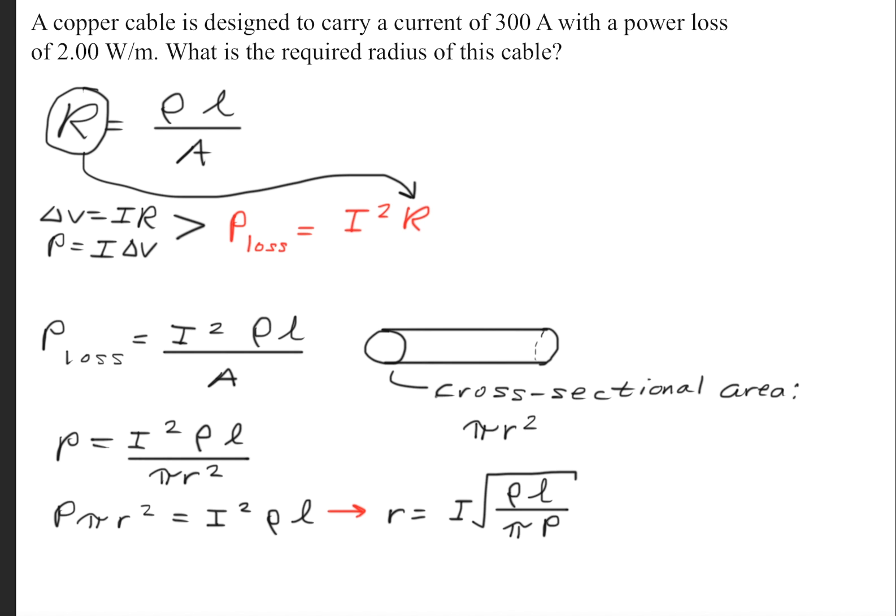So now we'll cross-multiply and we'll solve for R. Now we'll make one more modification to this equation, and that is we're going to divide by L in the numerator and the denominator. This allows us to write the formula as such.